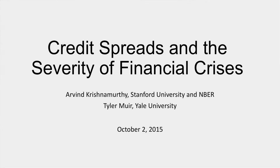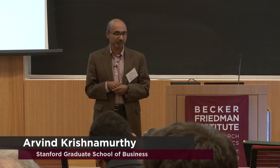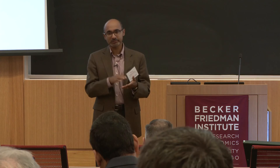This is joint work with Tyler. What we're doing in this paper is looking at a set of roughly 45 financial crises. We're trying to establish some common patterns. Since the US financial crisis, we don't really know clearly what happens in a crisis. For example, there's been lots of debate as to whether the slow recovery from the US is a common pattern across financial crises, or is it special to what happened in the US in 2008?